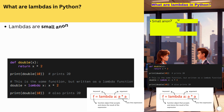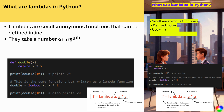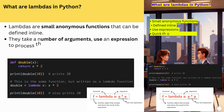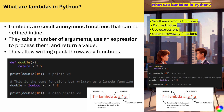What are lambdas in Python? Lambdas are small anonymous functions that can be defined inline. They take a number of arguments, use an expression to process them, and return a value. They allow writing quick throwaway functions.